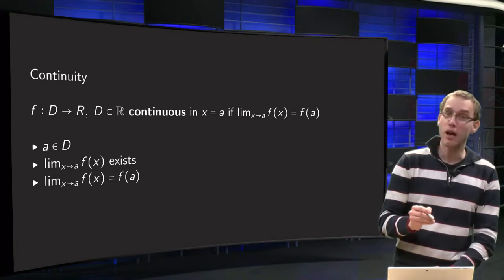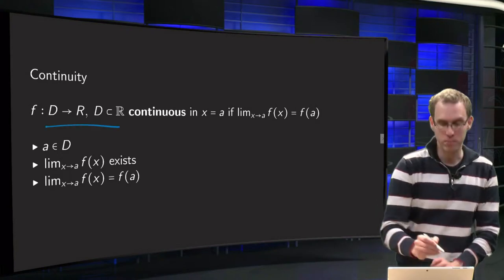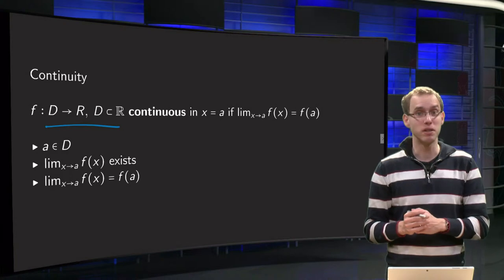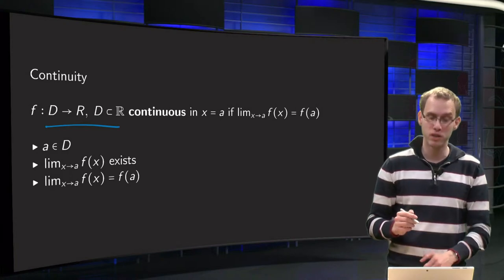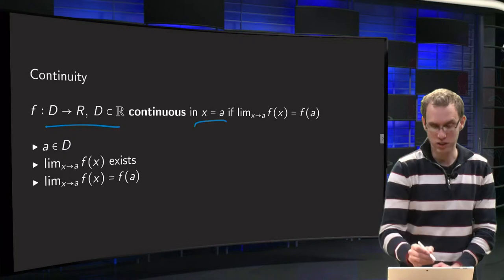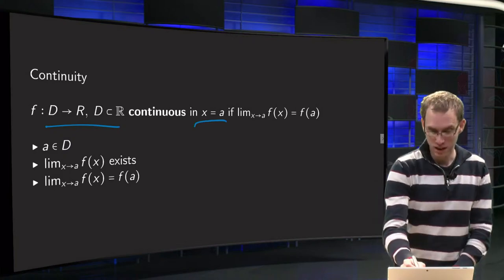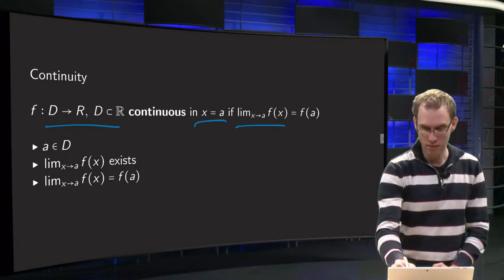Well, f is a function from D to R, where D is a subset of R, the real numbers. Then f is said to be continuous in x = a if lim(x→a) f(x) = f(a). So one condition: if x approaches a, then f(x) has to approach f(a).